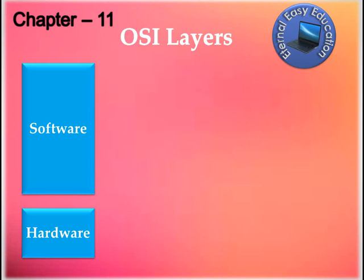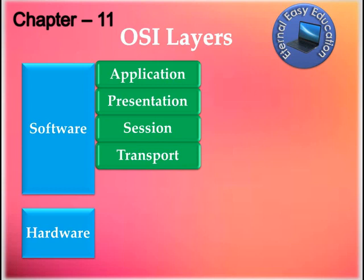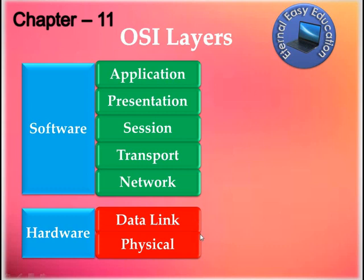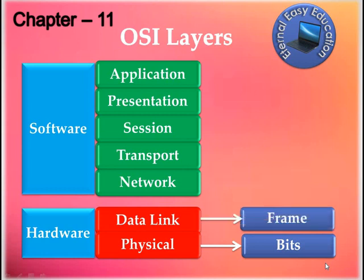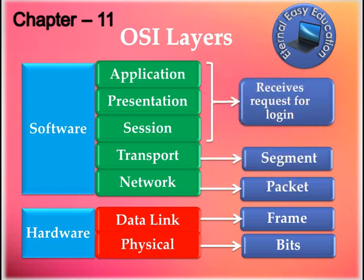These layers are categorized into hardware and software — the same concept as in TCP/IP. Application, Presentation, Session, Transport, and Network layers fall under software, meaning they are sets of instructions. Data Link and Physical layers are hardware — we can see them with our own eyes. In the Physical layer, data is in the form of bits; in the Data Link layer it is in the form of frames; in the Network layer it is packets; and in the Transport layer it is segments.